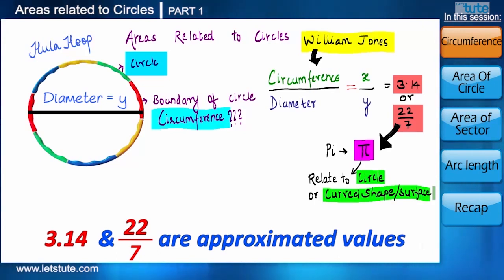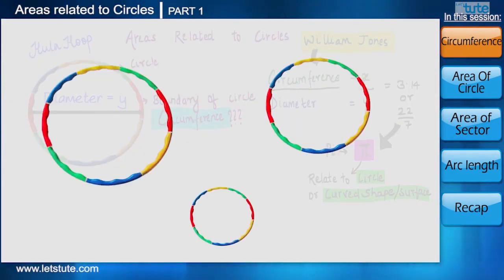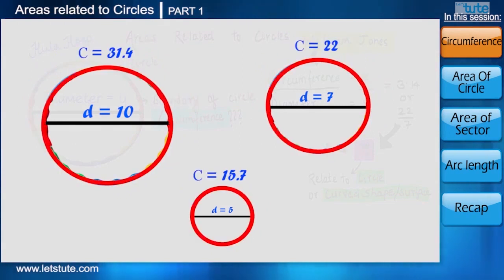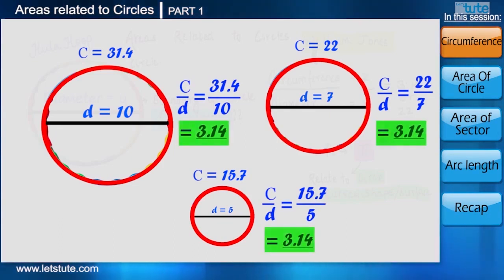So whenever we see this constant pi, we can immediately relate it to a circle or some other curved shape or surface. Now let's see whether the ratio of circumference to diameter is always 3.14 or not. For that, let's do a simple activity here. We will take few hula hoops of different diameter. We know by breaking them, we can measure its circumference. And here if we take the ratio of circumference to their respective diameter, we are obtaining 3.14 only.